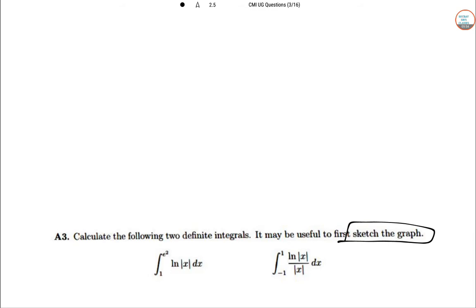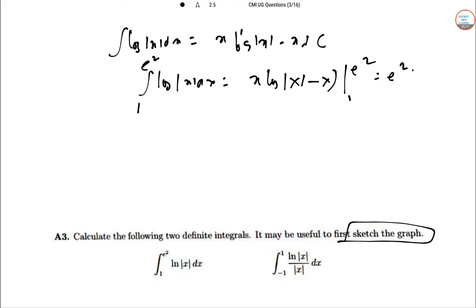We can do it directly, interpreting the first thing log of mod X DX. So this is we know this X log X minus X plus C and the second fundamental theorem of calculus. So from 1 by E square log of mod X DX, this is X of log of mod X minus X from 1 to E square. So this is E square plus 1.